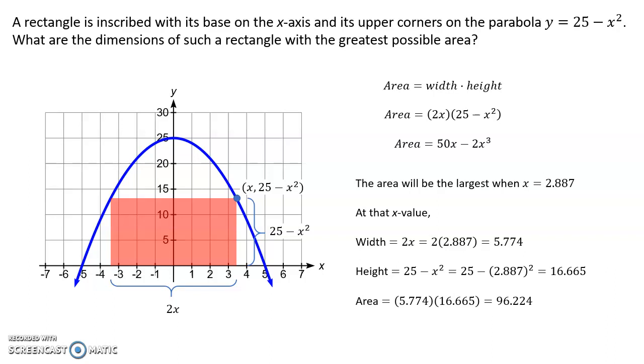And the height of the rectangle was given by the y value of the function. So that's 25 minus x squared. Again, plug in that x value and we can get about 16.665. And there we go. Those are the dimensions of the rectangle, the width and the height of the rectangle with the largest possible area. And it turns out, in this case, that area is about 96.224.